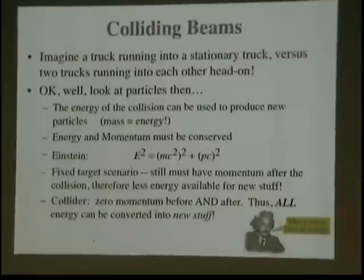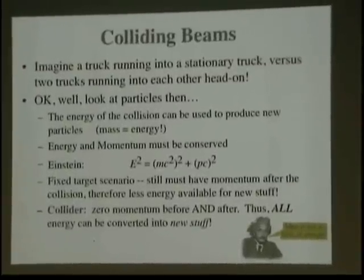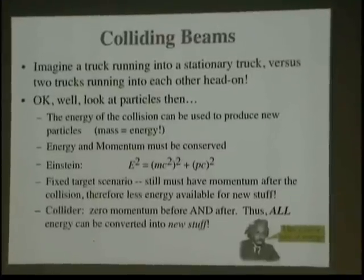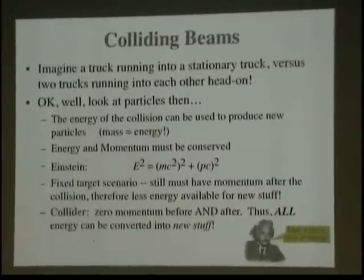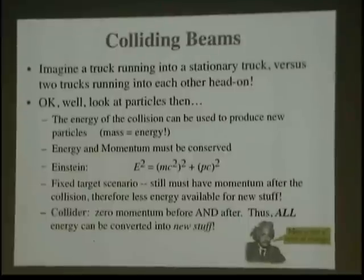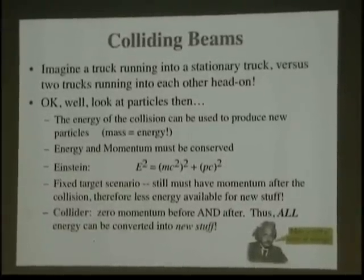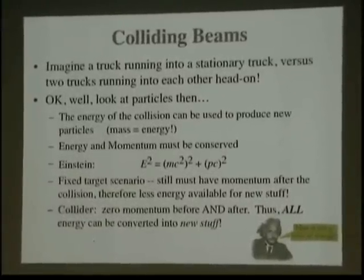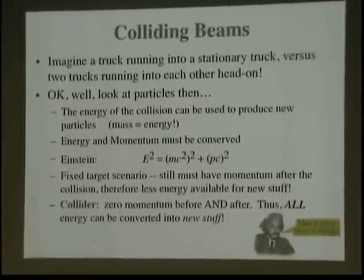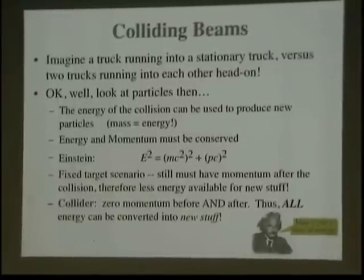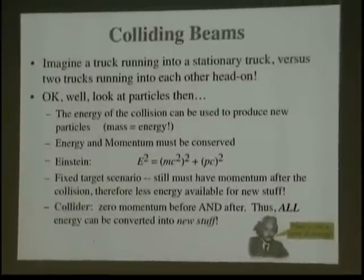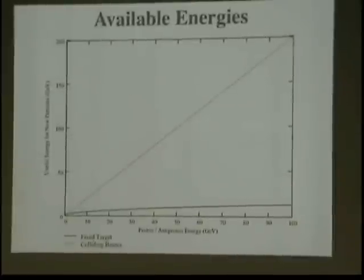Well, let's look at particles. The energy of the collision can be used to produce new particles, as we said earlier — mass and energy are equivalent. We've got to conserve energy and momentum according to Einstein. So in the fixed target scenario, we've got to have some momentum left after the collision, because you have one particle at rest and one moving. In the collider, particles are going in opposite directions, so both before and after the collision you have zero momentum. So all the energy can be converted into new stuff.